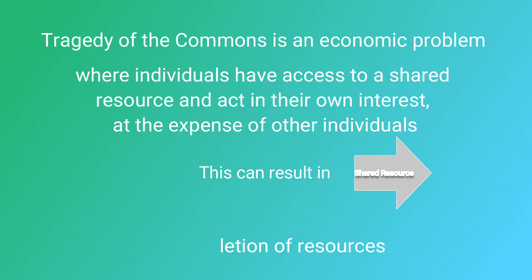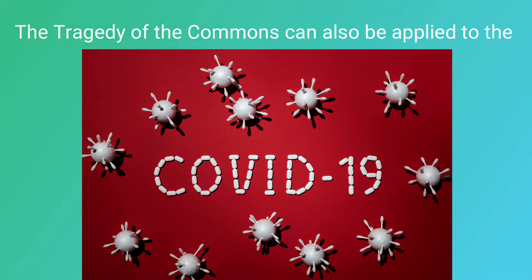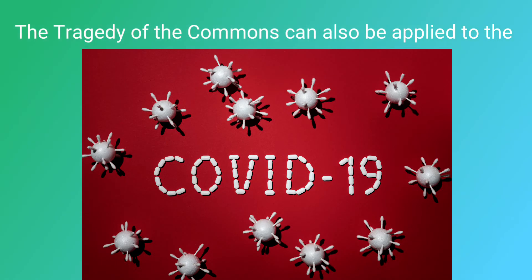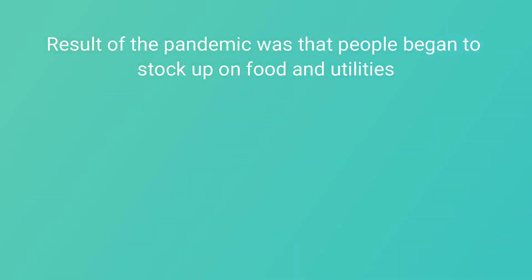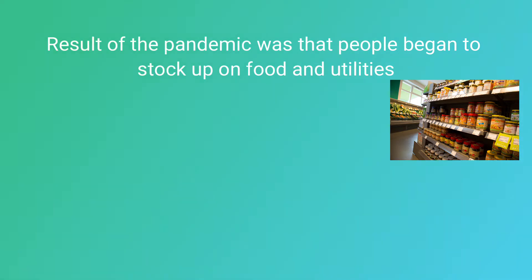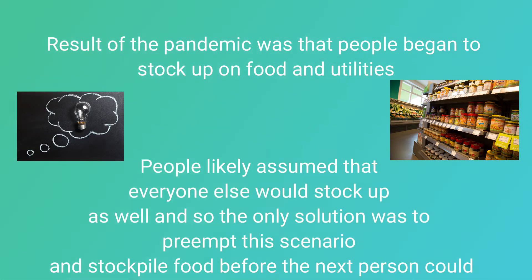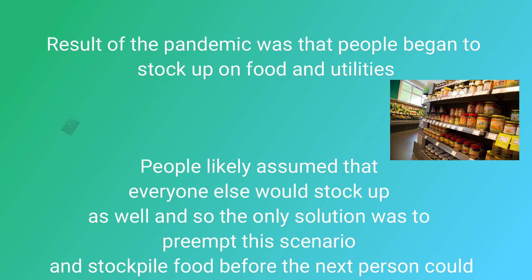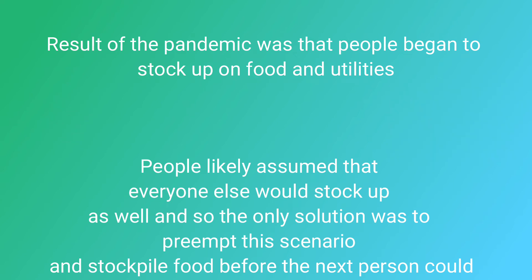The tragedy of the commons can also be applied to the pandemic. As a result, people began to stock up on food and utilities. People likely assumed that everyone else would stock up as well, so the only solution was to preempt this scenario and stockpile food before the next person could.